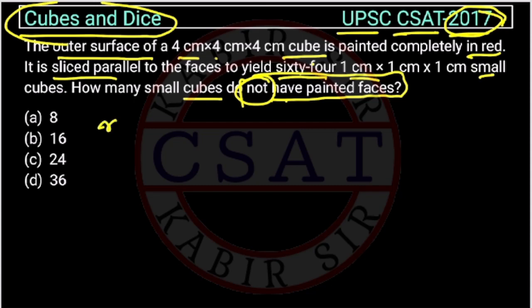This is direct formula based. First of all, we will calculate the n. n is equal to side of bigger cube divided by side of smaller cube. So, this will be 4 and total cubes, this is given 64, n cube is 64.